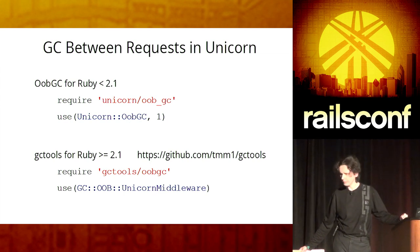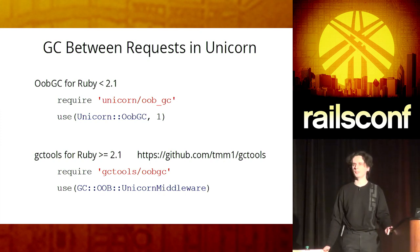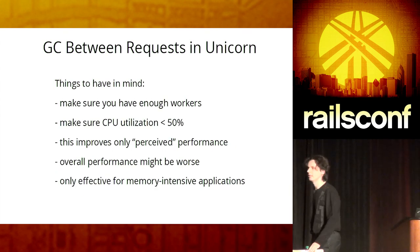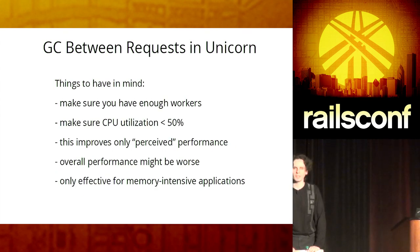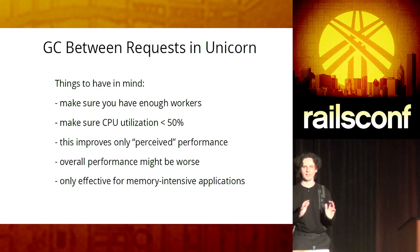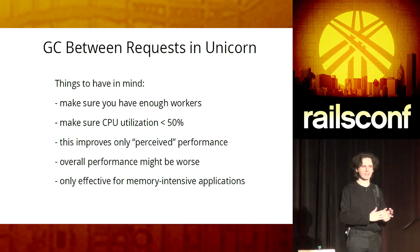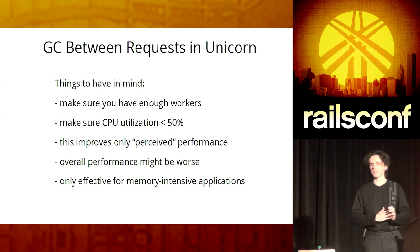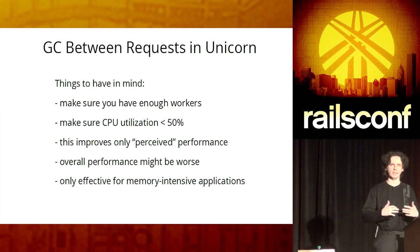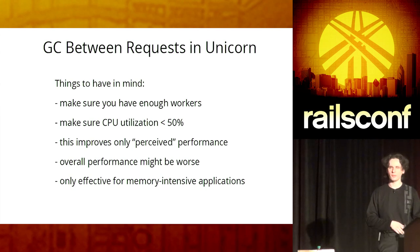Forcing GC between requests works pretty well, and Unicorn has a built-in way of doing this. For Ruby 2.1, there is an even better way of doing this with the GC tools gem. The only thing you need to keep in mind is that you need to have more workers to compensate for the time that your workers spend doing garbage collection. It is extra work, and you need to make sure you have enough resources to serve requests while your workers are doing garbage collection.